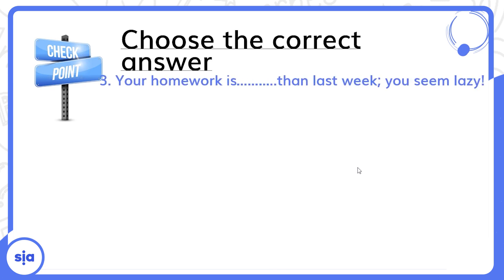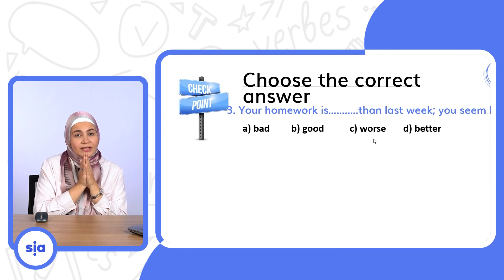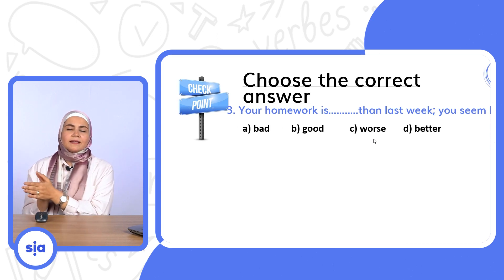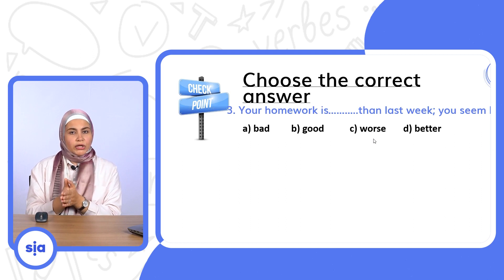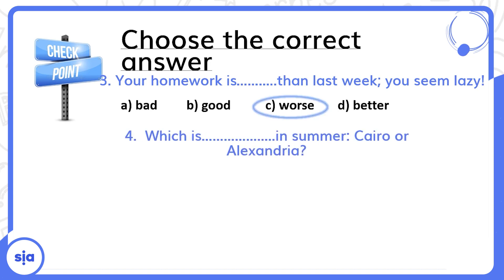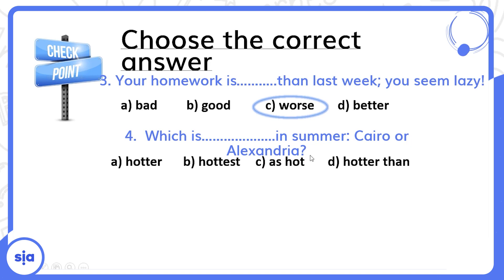You seem lazy — دي adjective وحشة. فيه بعض adjectives بتتغير تماماً — irregular. good → comparative: better, superlative: best. bad → comparative: worse, superlative: worst. Your homework is worse than last week — worse. Number four: Which is hotter in summer, Cairo or Alexandria? — hotter.